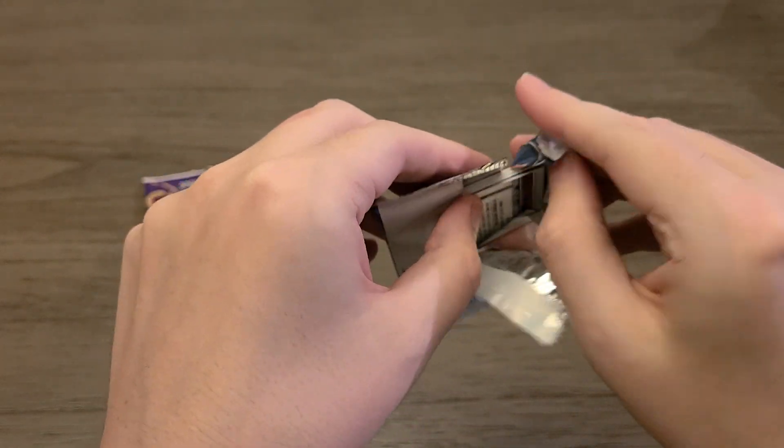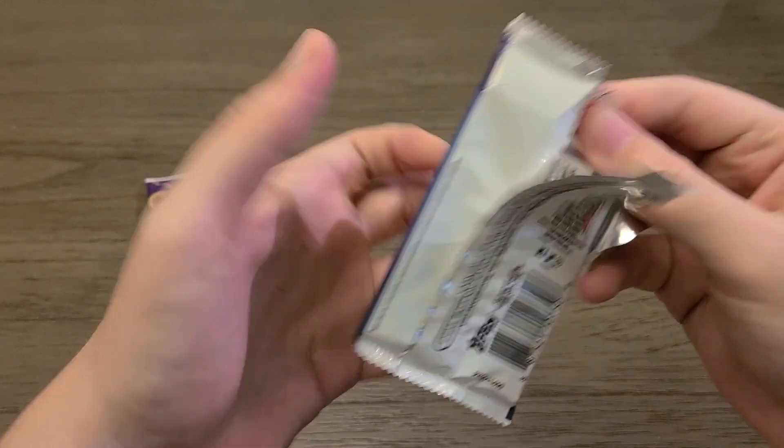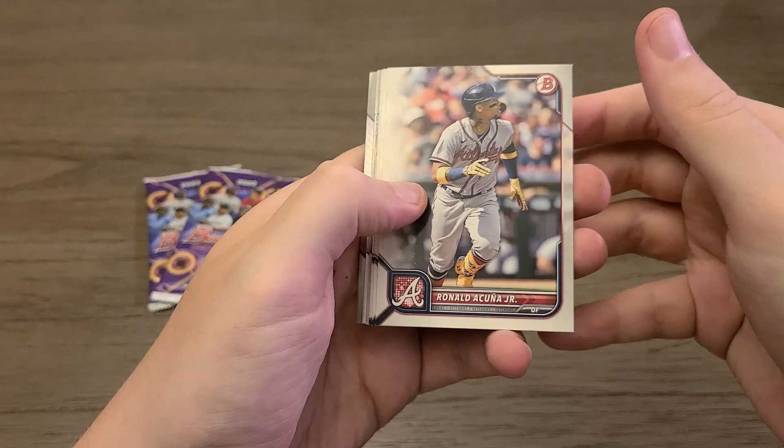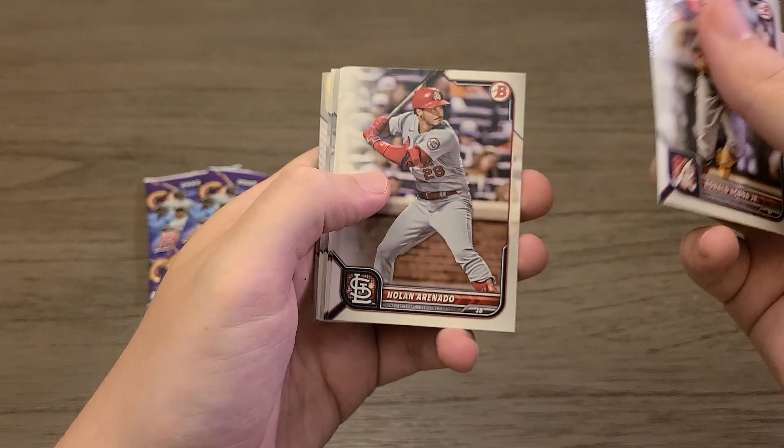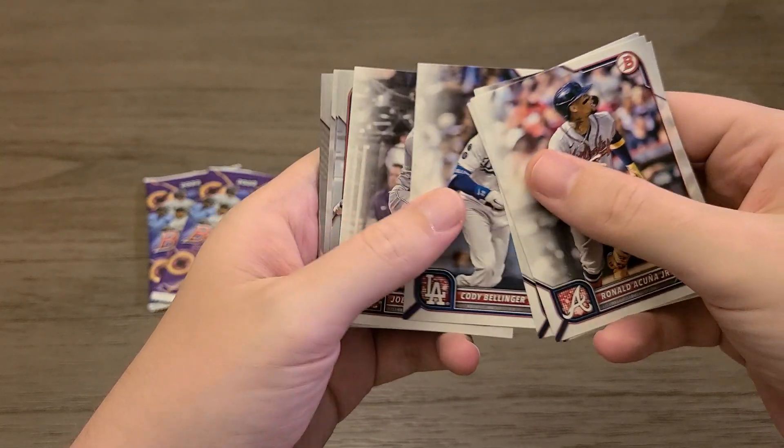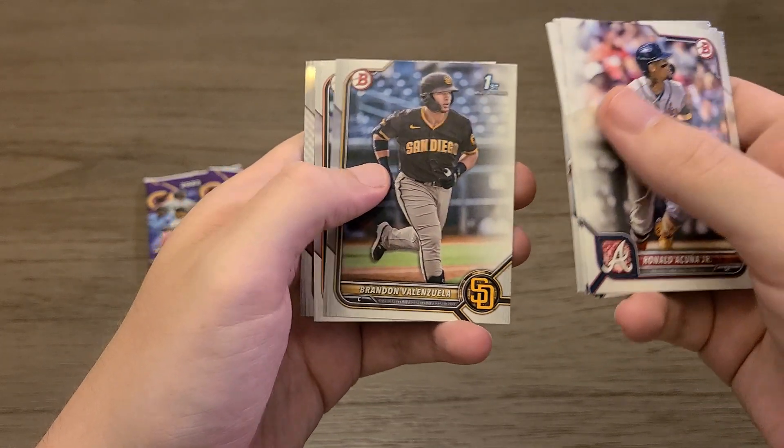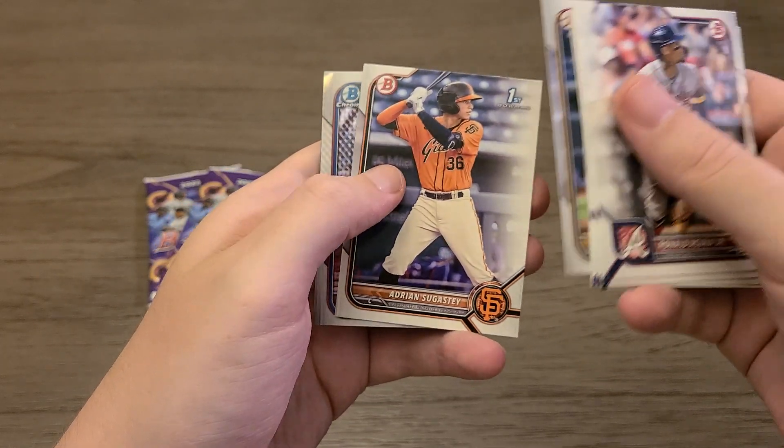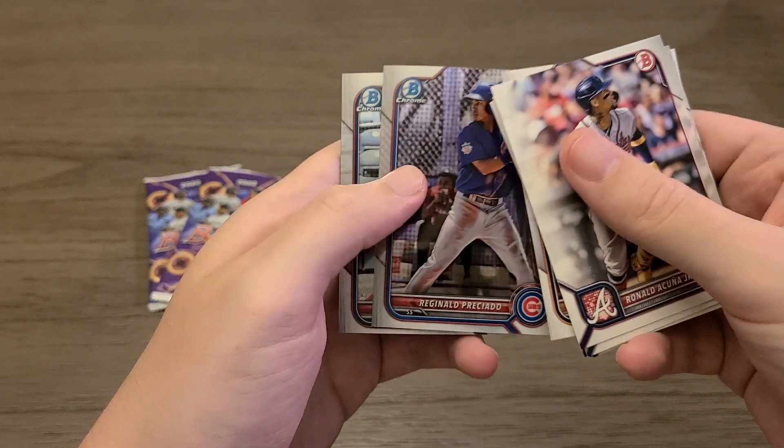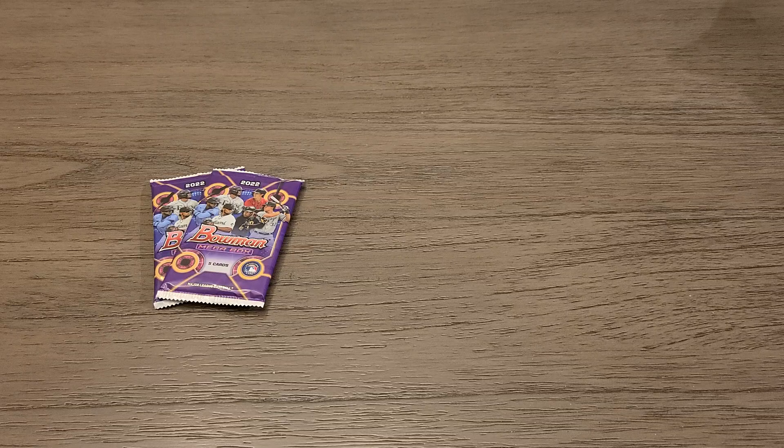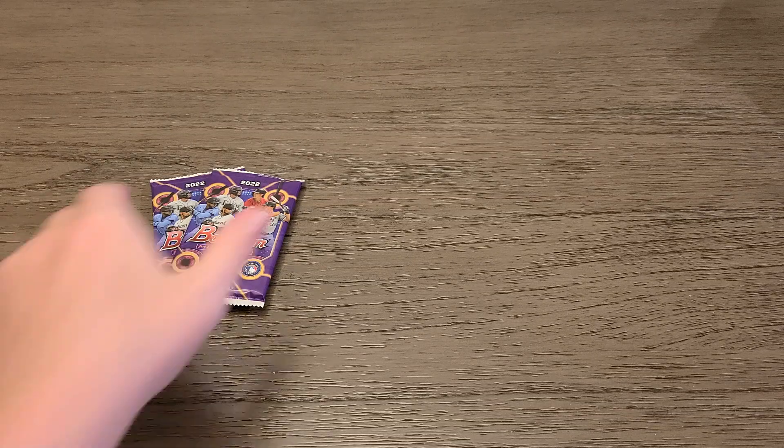Nothing huge yet. The other packs can be where all the value is but you might find a couple of decent cards here in the base pack. Acuña, Stanton, Nolan Arenado, Cody Bellinger, Otto, Aroldis Vera and the Prospects, Valenzuela, Adrian Sugaste, Oriole Presciado and Alexander Ramirez. So nothing all that great in the base packs.